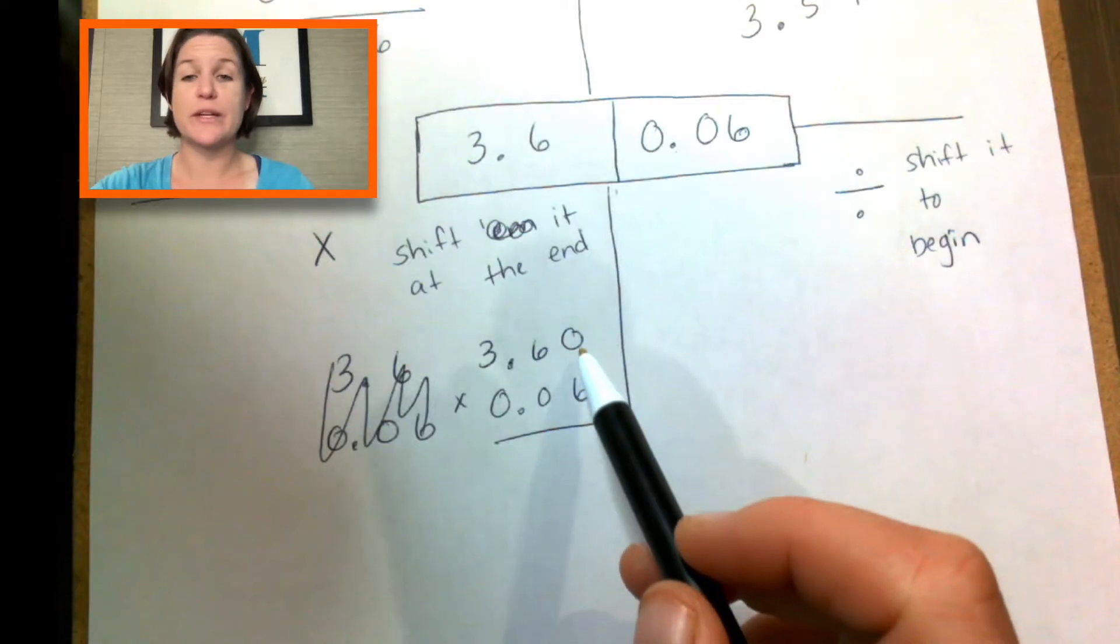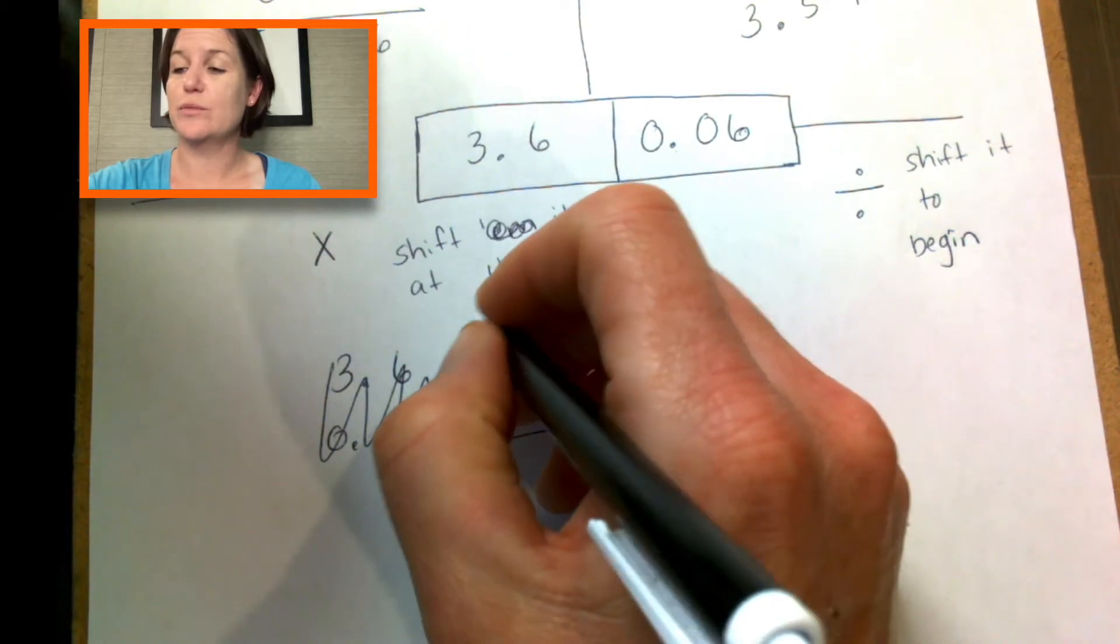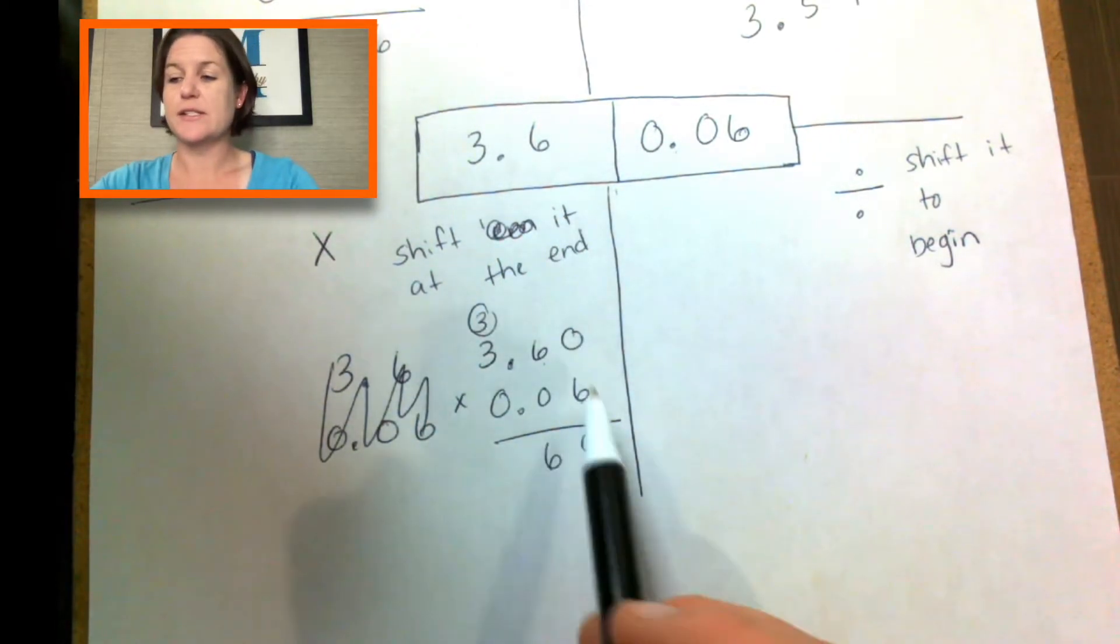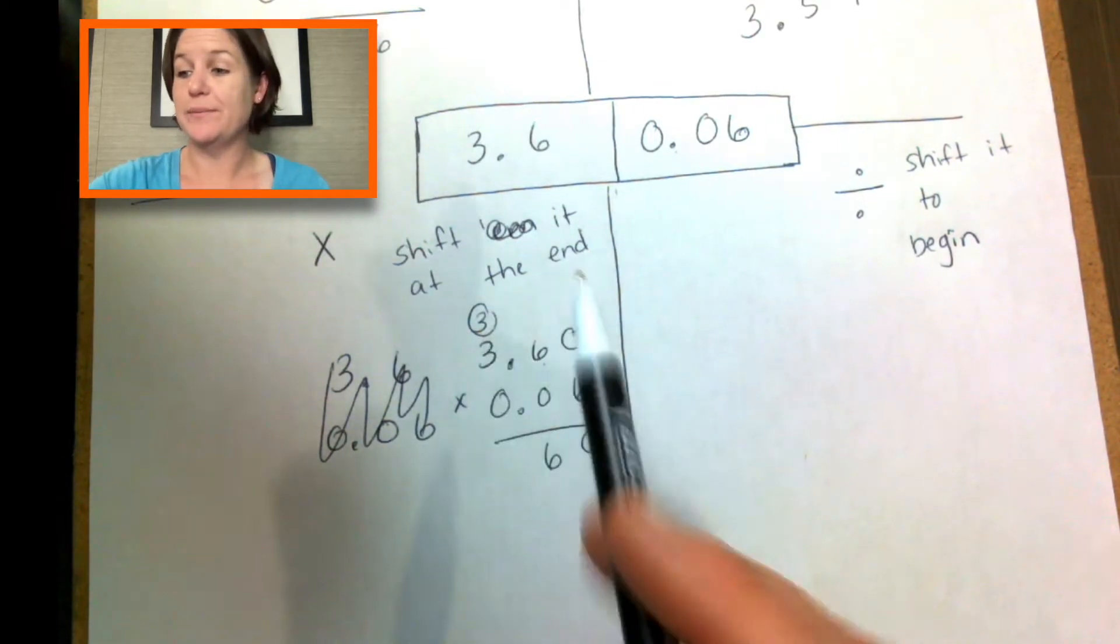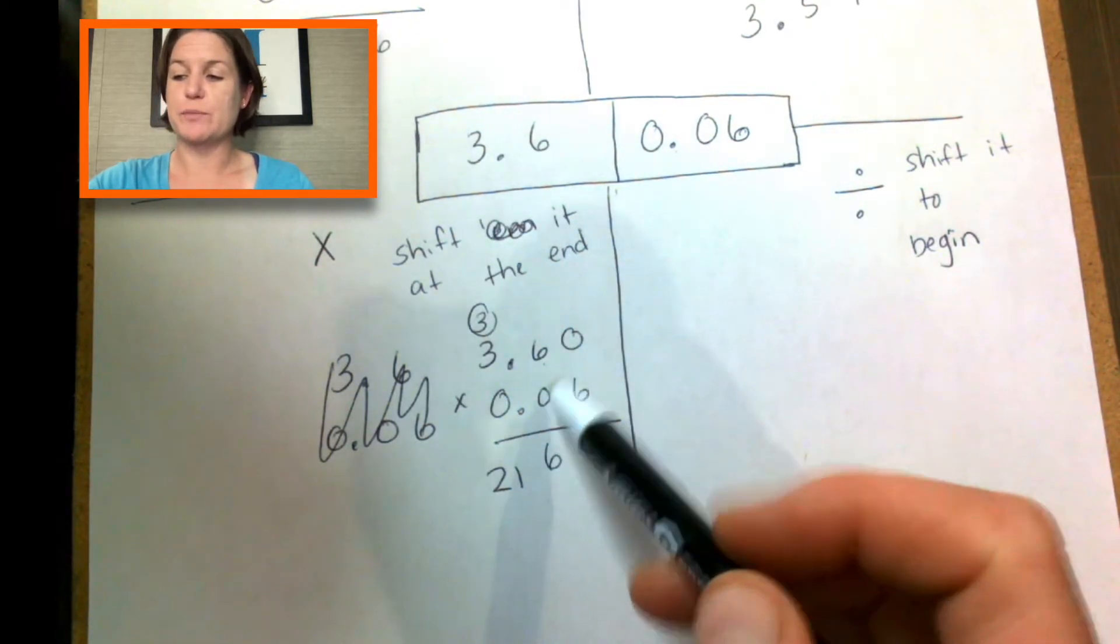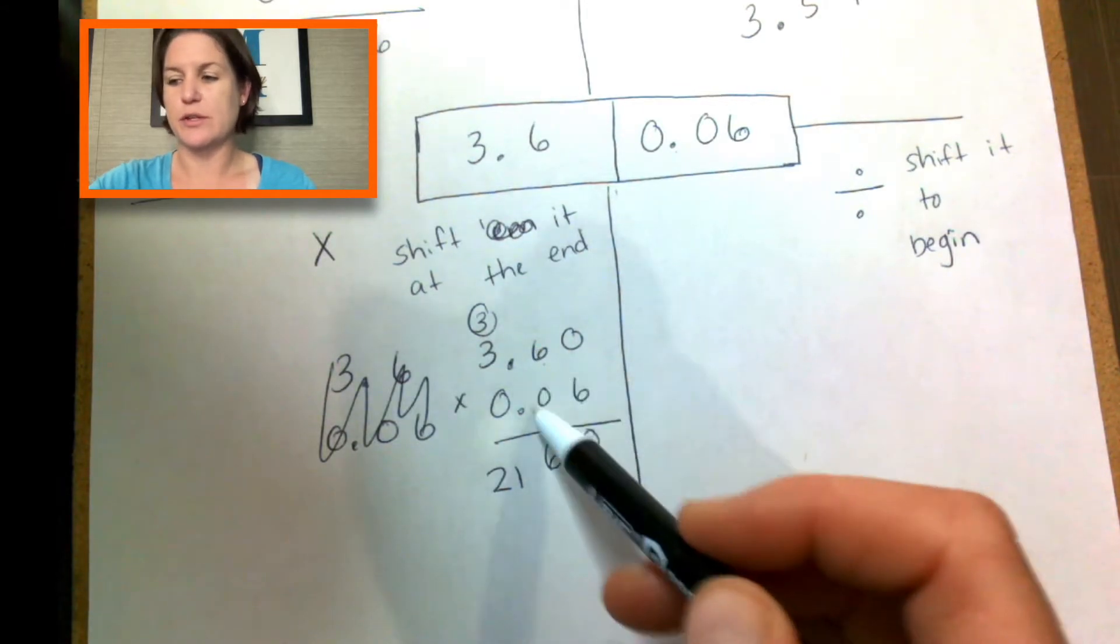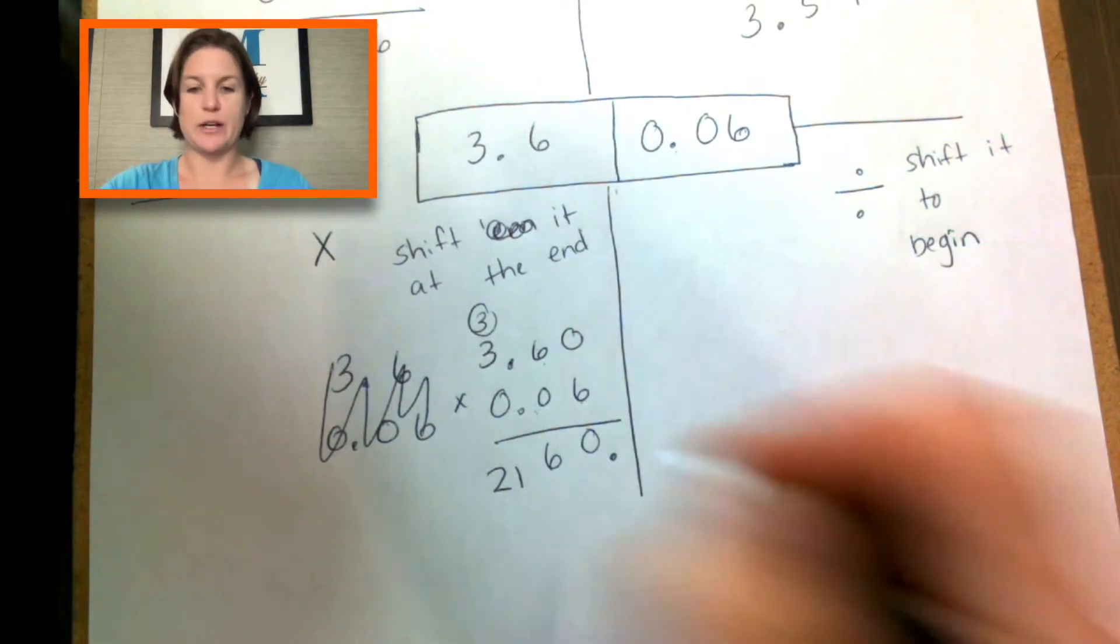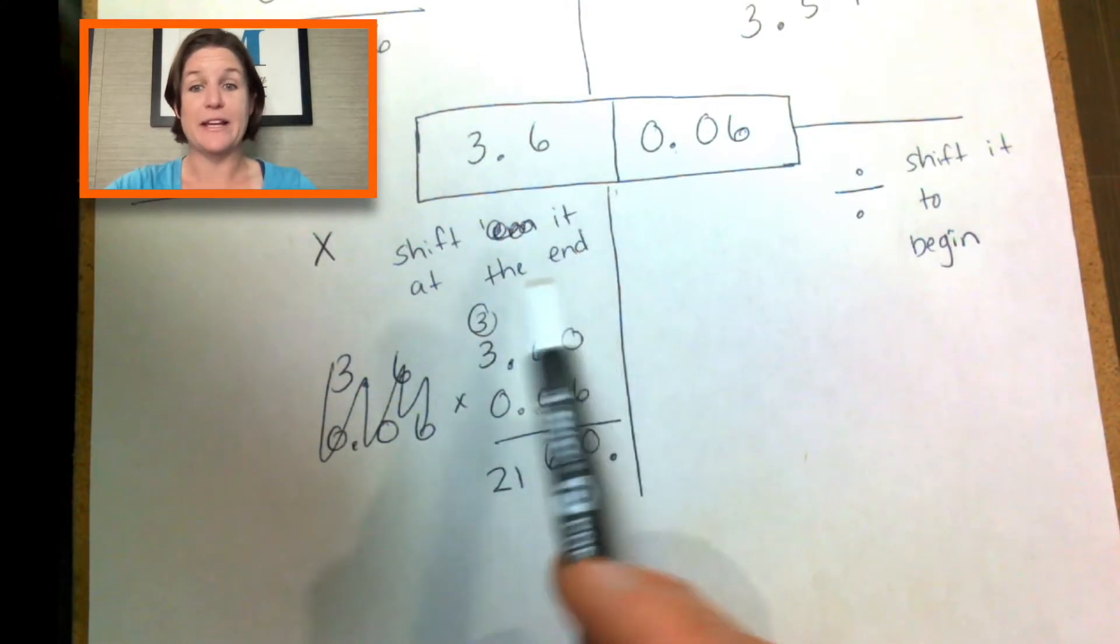So six times zero is zero. Six times six is 36. It's high up here in the clouds. Nice landing. Six times three is 18 plus three is 21. And now the other ones would just be zero. Zero times zero is zero. Zero times six is zero. So we're good here. But now we're going to imagine that there's this invisible decimal right here. At the end.